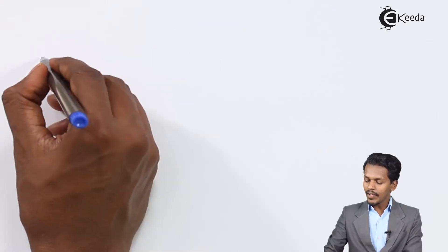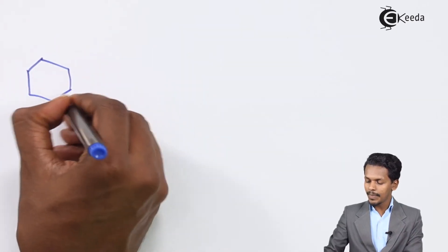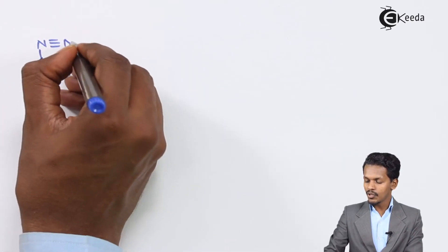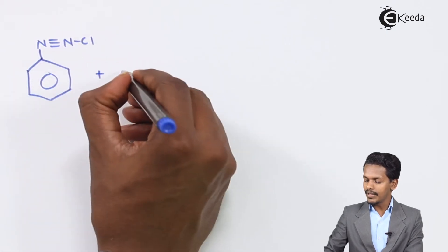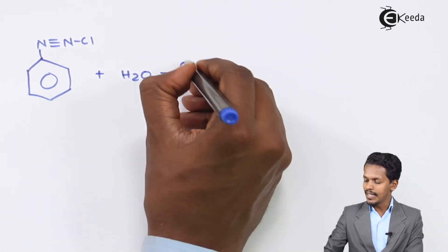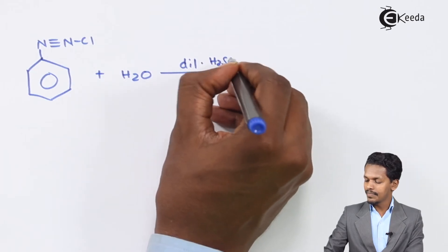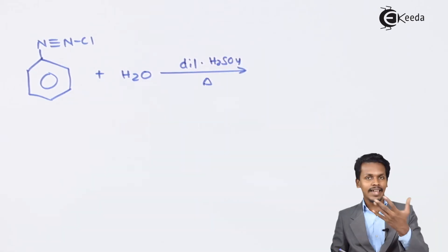Now let us understand this. The product that we have obtained in step number one is benzene diazonium chloride. Now that on treatment with H2O and in presence of dilute sulfuric acid, obviously it is a hydrolysis process.